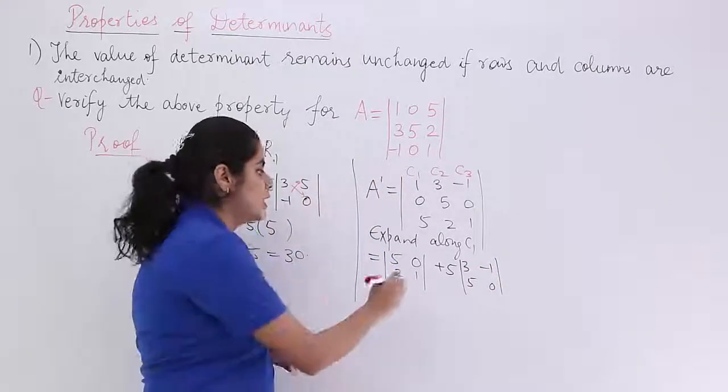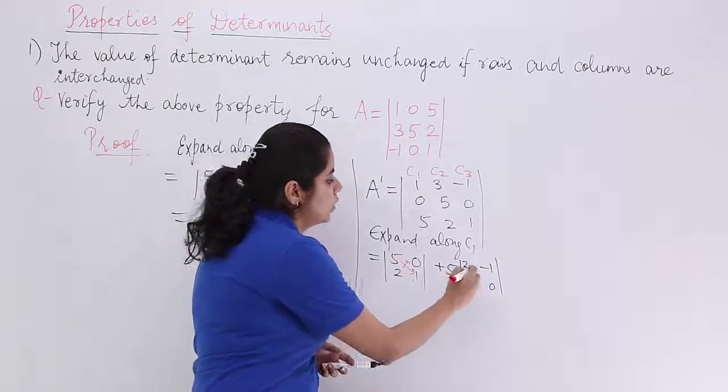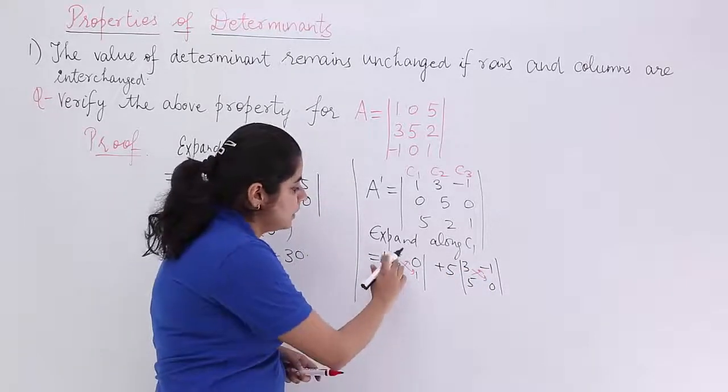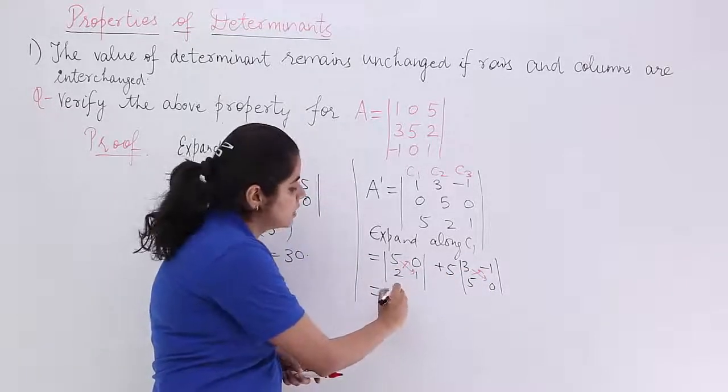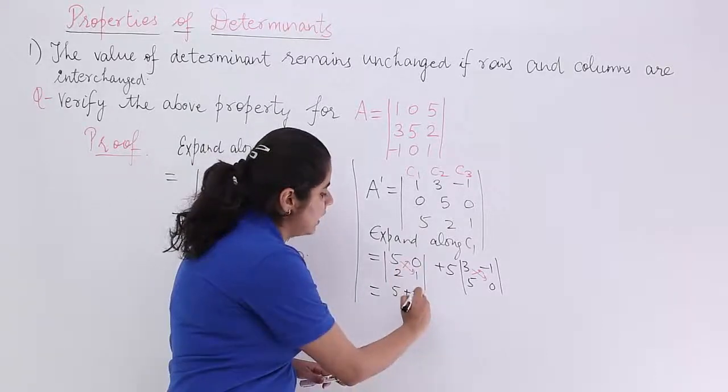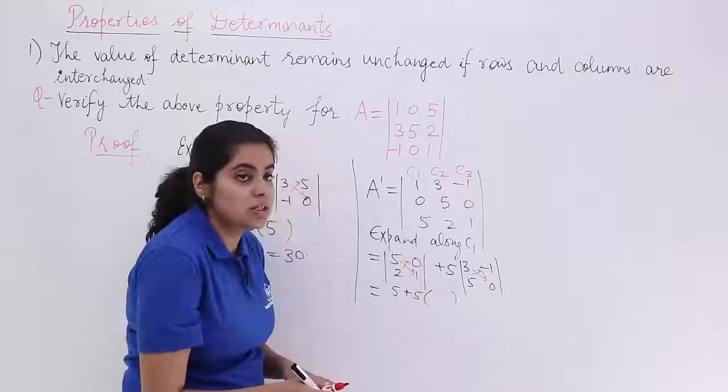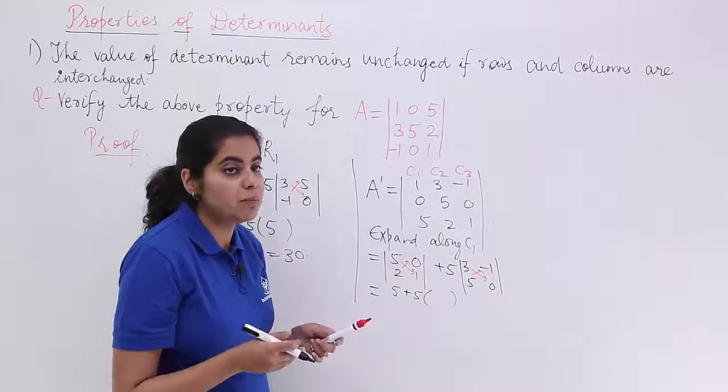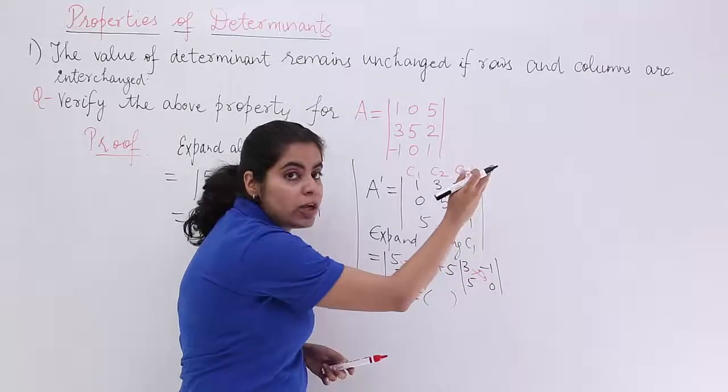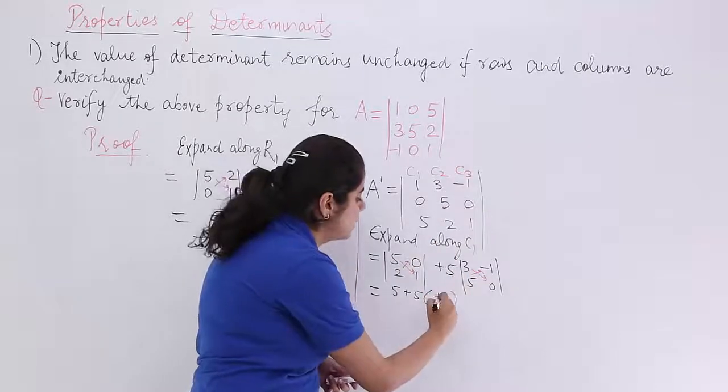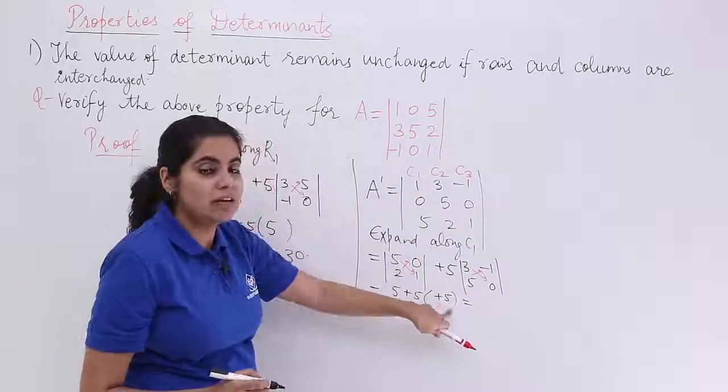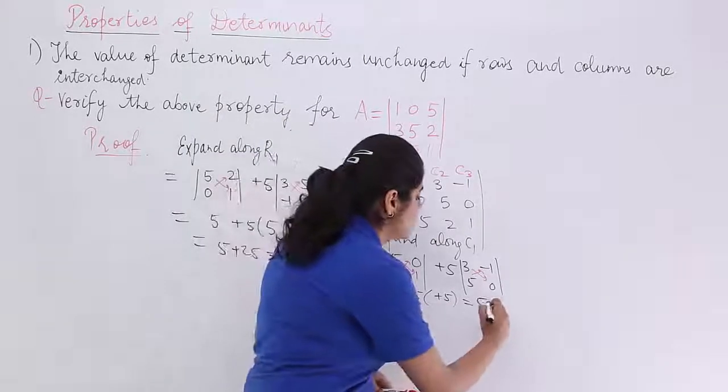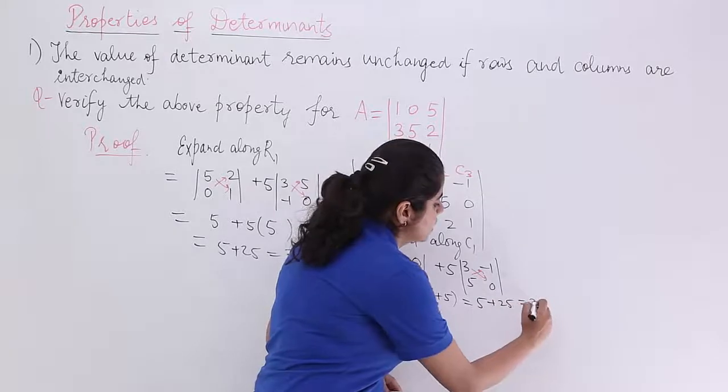What is the answer? Cross multiply here and here to get the answer. It makes me 5. 0 times 2 is 0, leave it. Plus 5 there. In the brackets, you see 3 times 0 is 0. Minus 1 into 5 is minus 5. Since we are going down to up, you have to write here plus 5. Now 5 into plus 5 is 25. 25 plus 5 is 30. So it is 5 plus 25, which is 30.